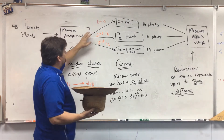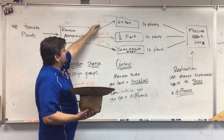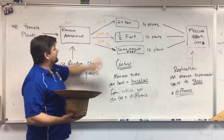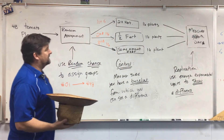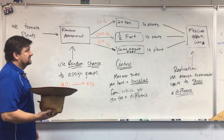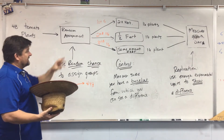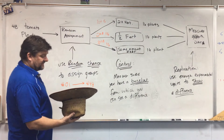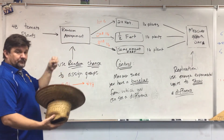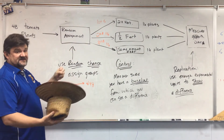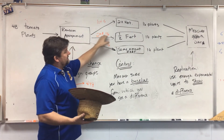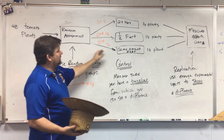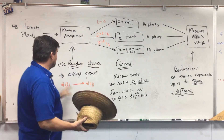The first 16 plants I pull go to the first group and they get two times the fertilizer. The next 16 go to group B and they get half the fertilizer. Once I've pulled those 16, the remaining 16 all go into the third group. That's the idea — using random chance to assign groups.